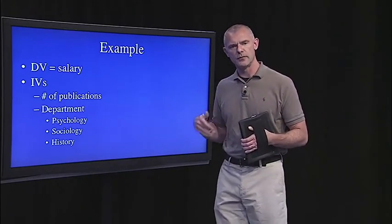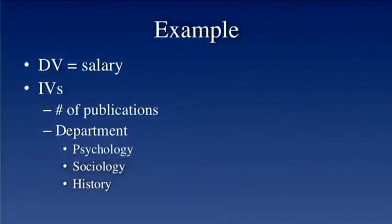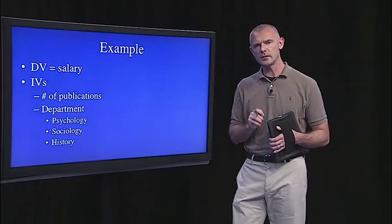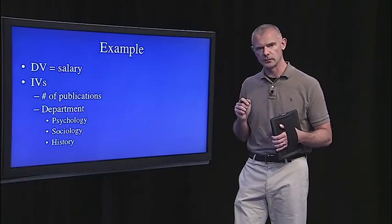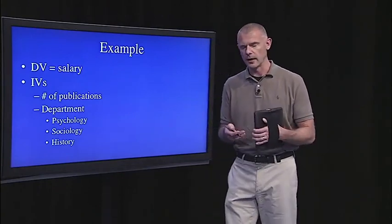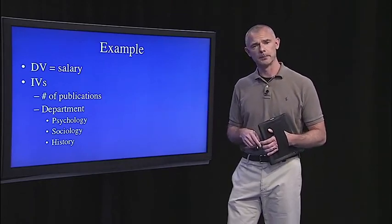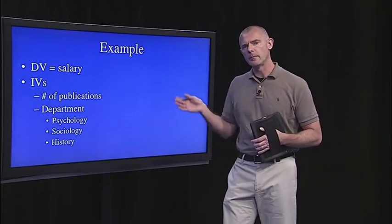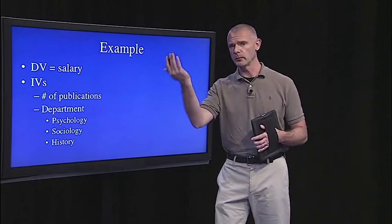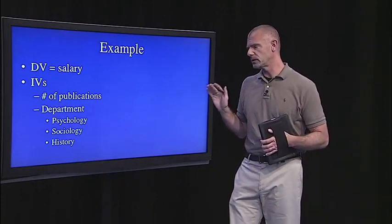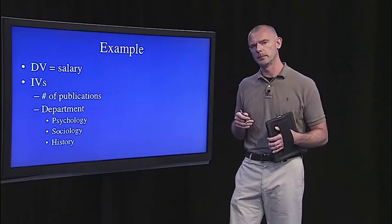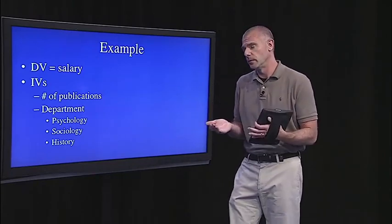For this example, I'm going to go back to the faculty salary data set. We're predicting faculty salary from number of publications and from what department the professor is in. We'll look at three departments: psychology, sociology, and history. The question, because we're doing moderation analysis, is: does department moderate the relationship between publications and salary? We know that publications is positively correlated with salary, so professors who publish more make more money. But does that relationship vary as a function of department? That's an empirical question.